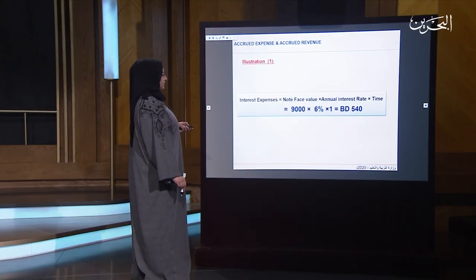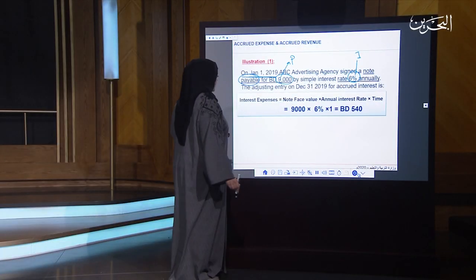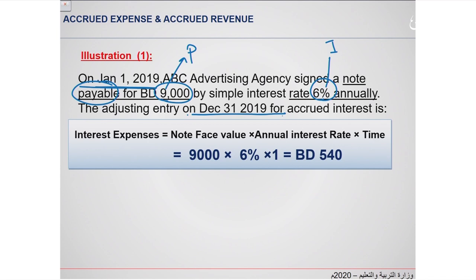Let's see example one. On January 1, ABC Advertising Agency signed a note payable for $9,000 paid by simple interest. This is the principal, with a simple interest rate of 6% — that is the rate (I). The period is annually. You want the adjusting entries for December 31, 2019. From January 1 until December 31 means one year — that is the time (T).